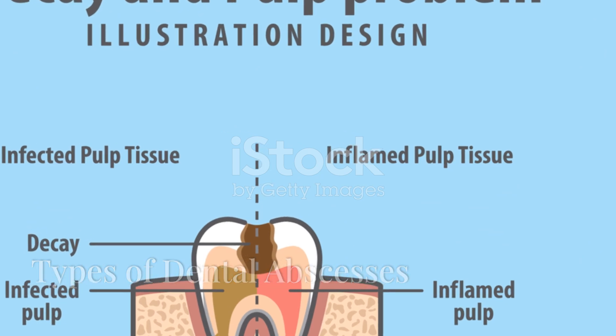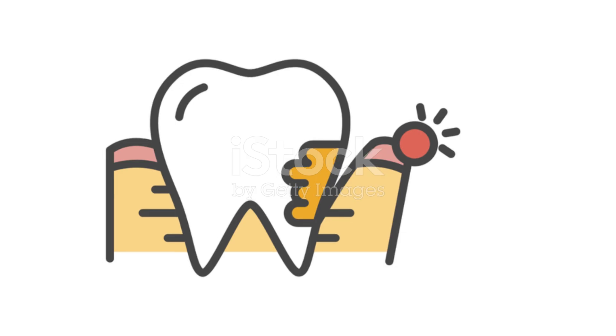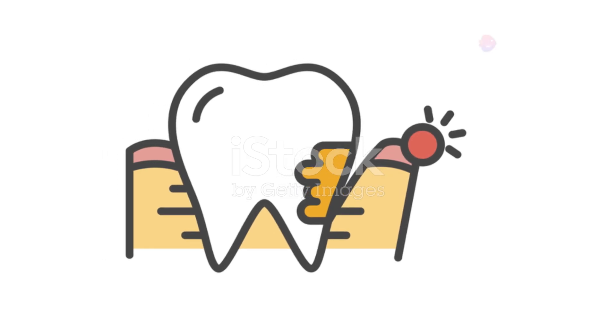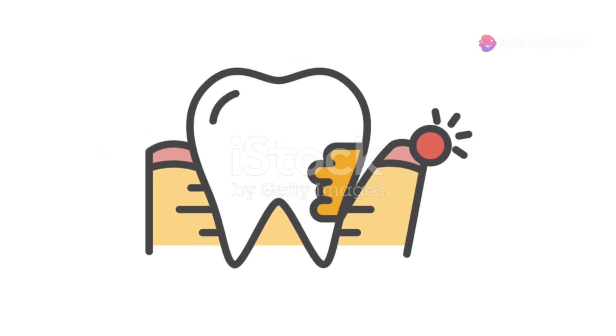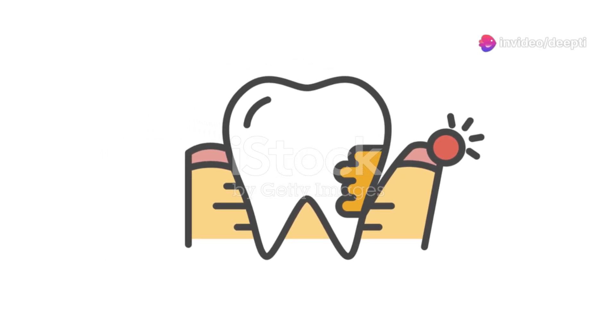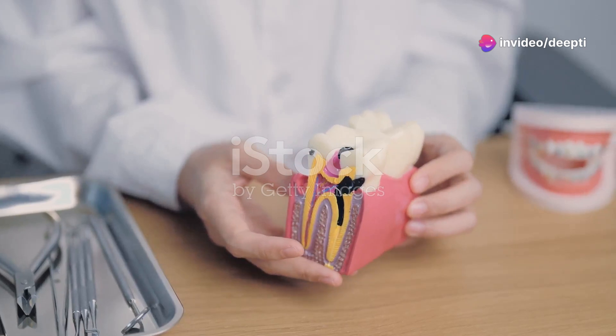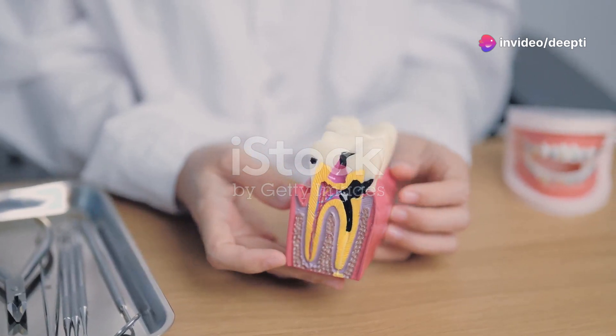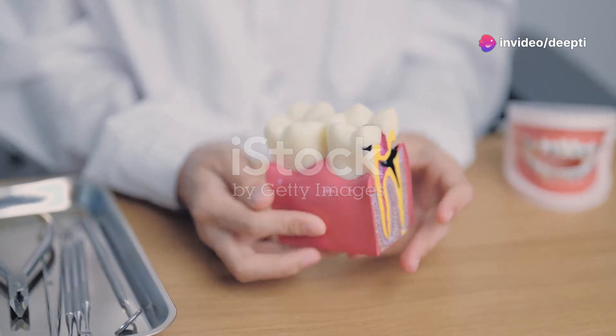There are three main types of dental abscesses: periapical, periodontal, and gingival. Each type occurs in a different area of the tooth or surrounding tissues.